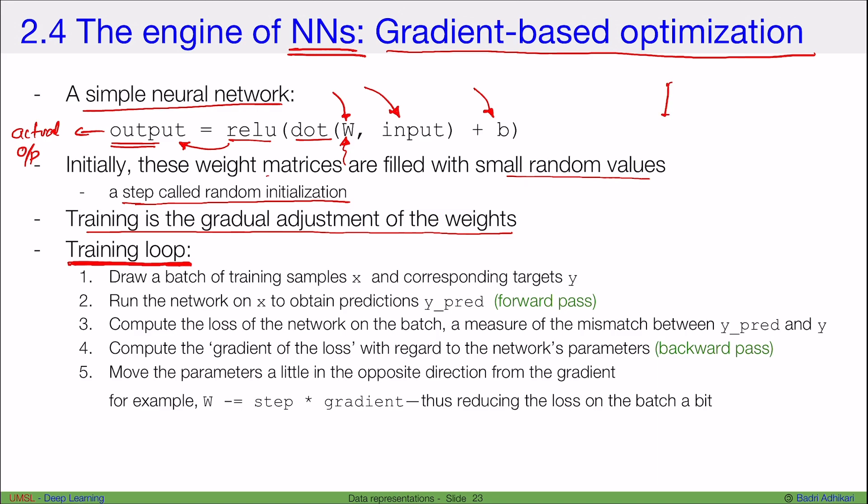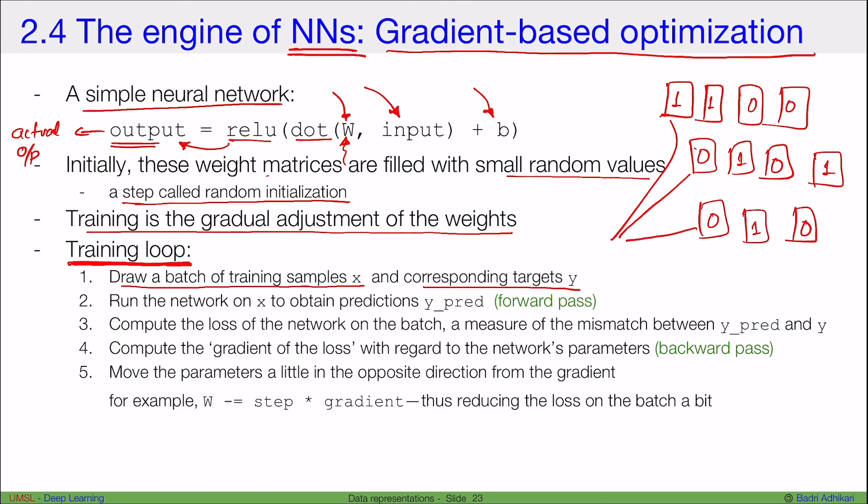Say we want to classify pictures. Let's say we have a database of pictures, a lot of pictures, and some of them are pictures of a dog, which I represent by 1, and the others are pictures of a cat, which I represent by 0. The first step is to draw a batch of training samples x and the corresponding targets y. So I can randomly sample, let's say 1, 2, 3, 4 examples, which I consider as x, and the corresponding targets as y.